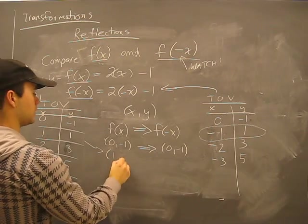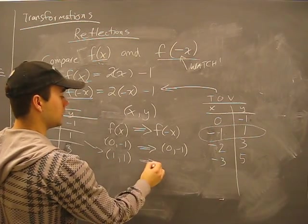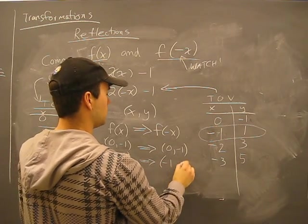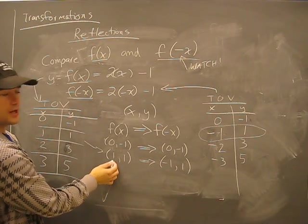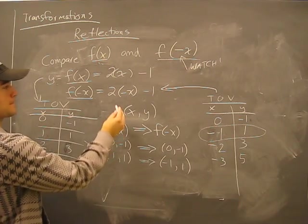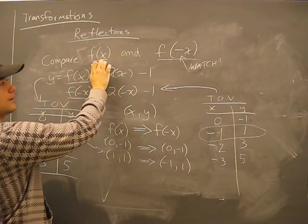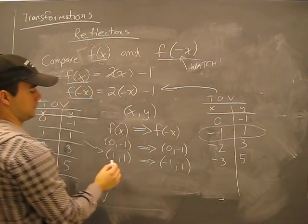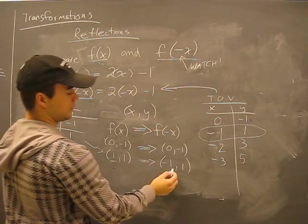This one, we had one, one. We did something, we did our function, and we end up with negative one, one. What was the change in x? Just like our function said, if we have x, we're going to do something. We're going to compare it to negative x, our x value, which was positive, is now negative.